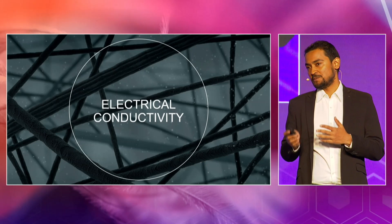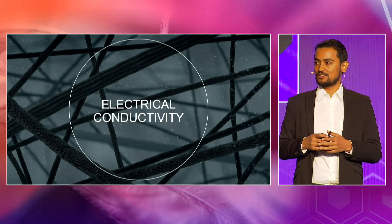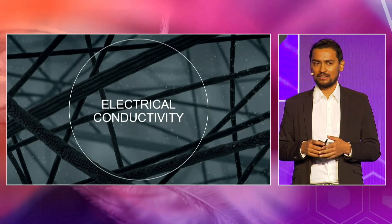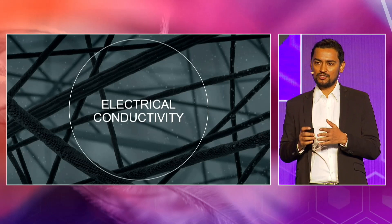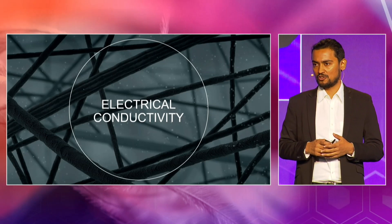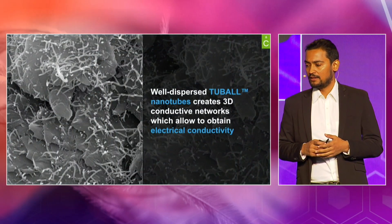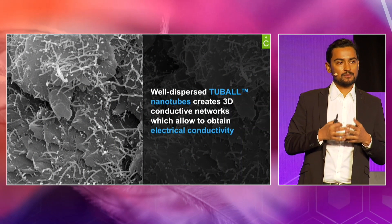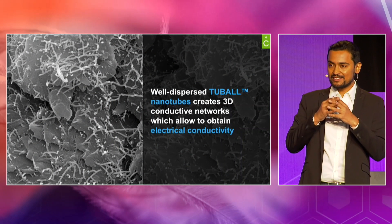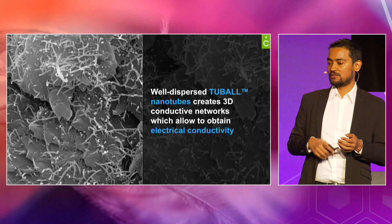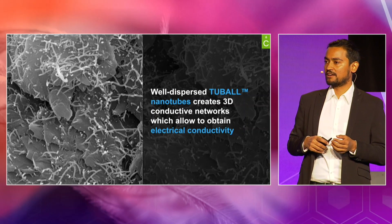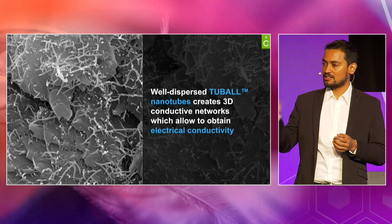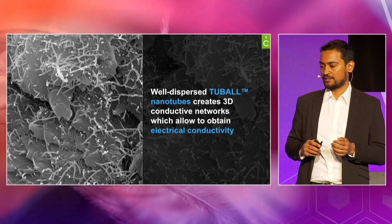Coming to the specific point of electrical conductivity, it is one of the most sought-after and commercially used applications of graphene nanotubes. Well-dispersed Tuball inside a polymer creates its own 3D conductive network, which can give electrical conductivity because electrons can transfer through the whole polymer matrix.